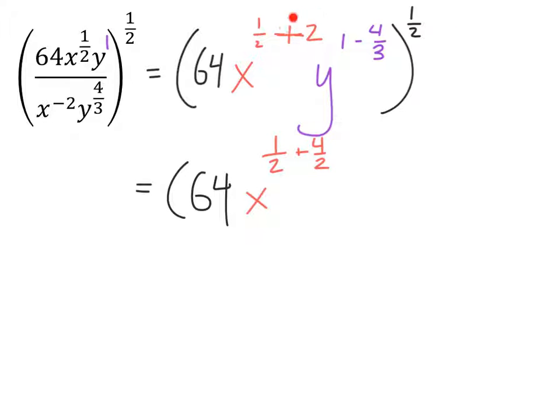Notice with the x, I took 2 over 1 and multiplied both the 2 and the 1 by 2, giving me 4 over 2. 4 divided by 2 is 2. That's another way to look at it.